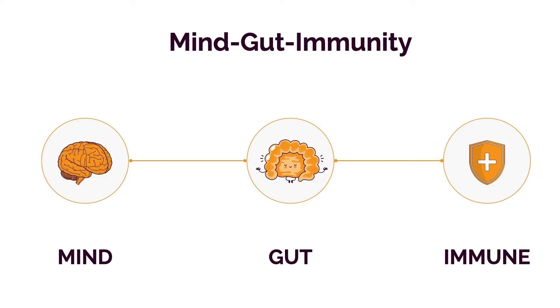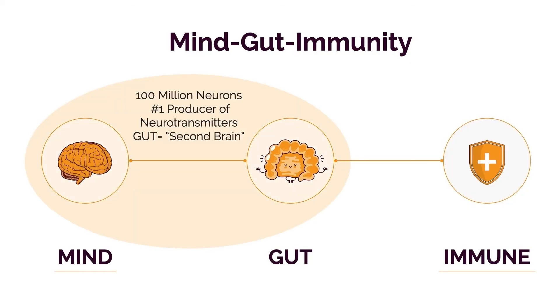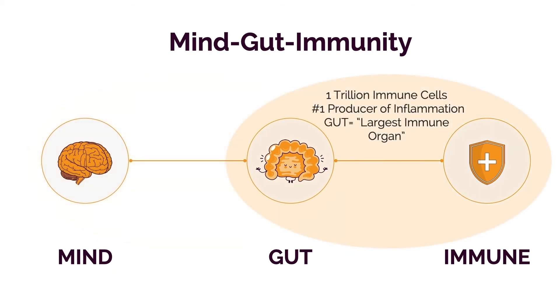The gut contains 100 million neurons and is the largest producer of neurotransmitters in the body — that's why it's earned the nickname 'the second brain.' It's also host to 1 trillion immune cells, which means a majority of your immune system is actually housed in the gut. The most important and relevant question you can ask yourself comes back to the Big Five epigenetic environmental triggers: diet, digestion, sleep, stress, and exercise.